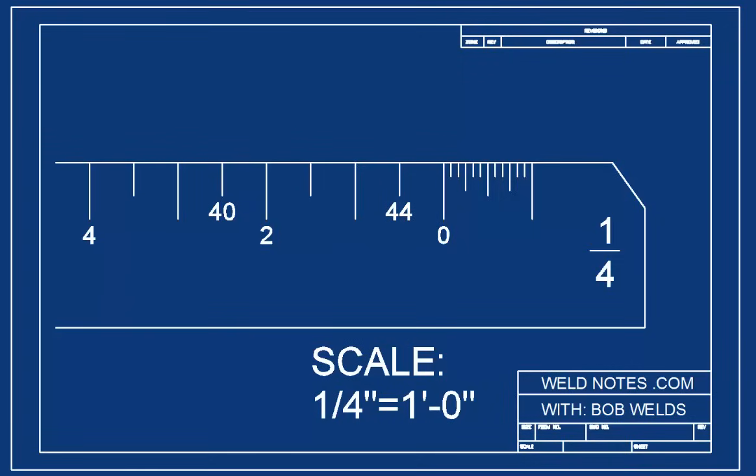On an architect's scale, there are different marks for the foot and the inch parts of the measurement. On one side of this zero is where you measure the feet, and on the other side is where the inches come from.